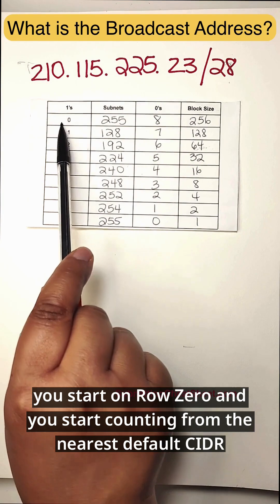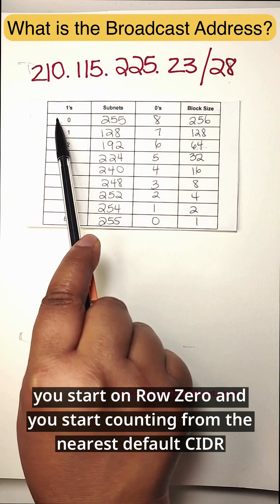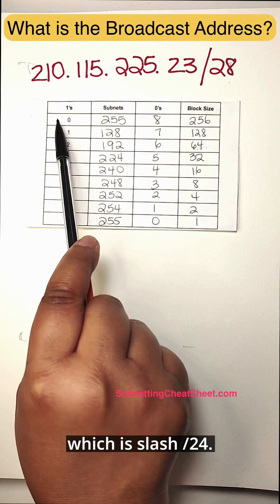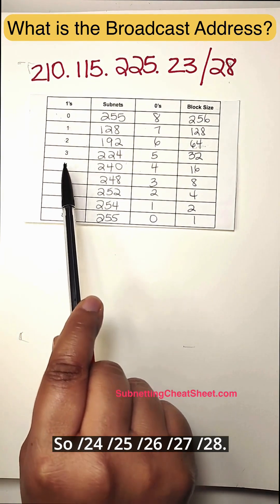So 28. You start on row zero and you start counting from the nearest default CIDR, which is slash 24. So 24, 25, 26, 27, 28.